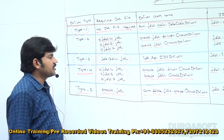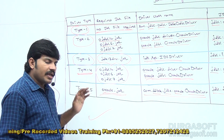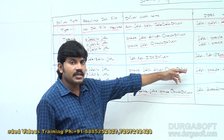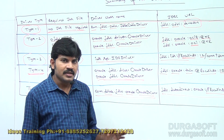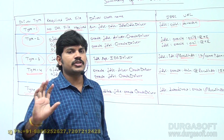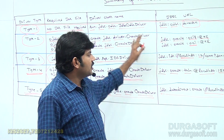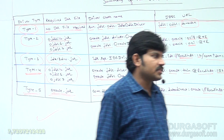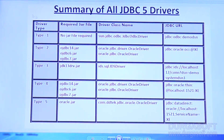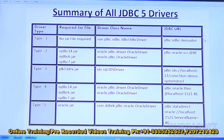This summary table covers working with all types of JDBC drivers including Type 5. Note that for Type 2 and Type 4, the jar files are the same and the driver class name is the same — the only difference is the JDBC URL. The JDBC program structure is always the same; only the jar file, JDBC URL, and driver class name change between drivers.